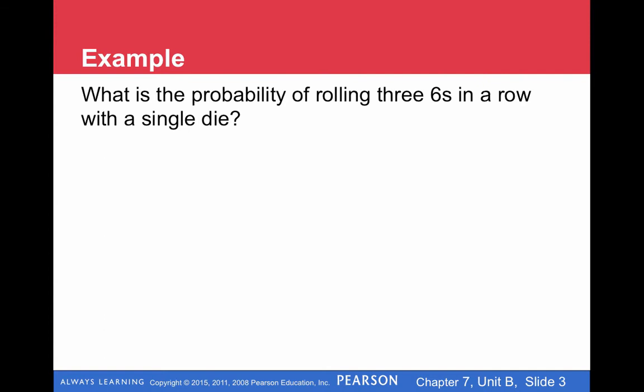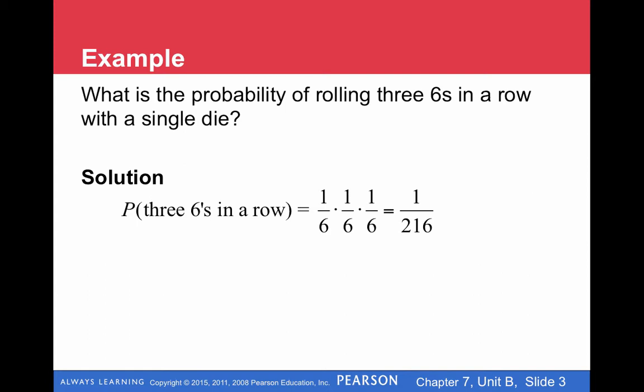So maybe we want to know the probability of rolling three sixes in a row with a single die. Three sixes in a row — that's three events, a six, a six, and a six — so we're going to multiply three probabilities. The main thing is to make sure the probability is independent each time, meaning it's the same each time. When we roll a die, the events are independent; the die does not have memory. There is one six out of six different numbers on a die, so you take one-sixth times one-sixth times one-sixth. When you multiply fractions, you multiply across: one times one times one over six times six times six, and you get one over two-sixteen (1/216).